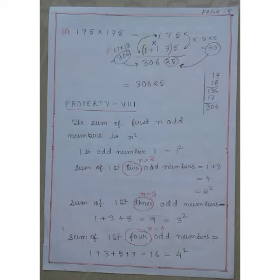Question number 2: 175×175. Again, I shall use the shortcut method. Units place, we have 5 and 5, 5×5 is 25. I shall write 25 directly in the ones place.